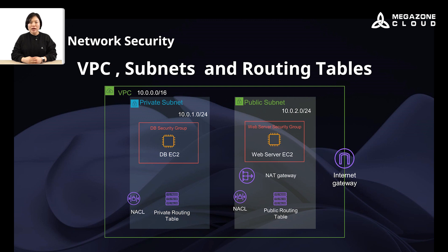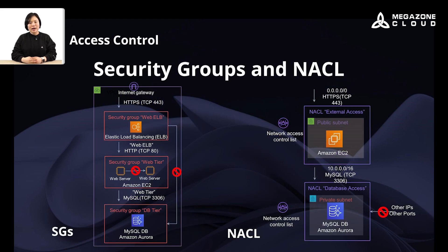Additionally, you can further control inbound and outbound traffic flow by configuring security groups and network access control lists. AWS security groups are virtual firewalls that control inbound and outbound traffic for resources like Amazon EC2 instances. They work by defining rules that allow or deny specific network traffic based on protocols, ports, or IP addresses. Each EC2 instance can be associated with one or more security groups, and the rules are applied at the instance's network interface level. Security groups are stateful, meaning that if inbound traffic is allowed, the corresponding outbound traffic is automatically permitted.